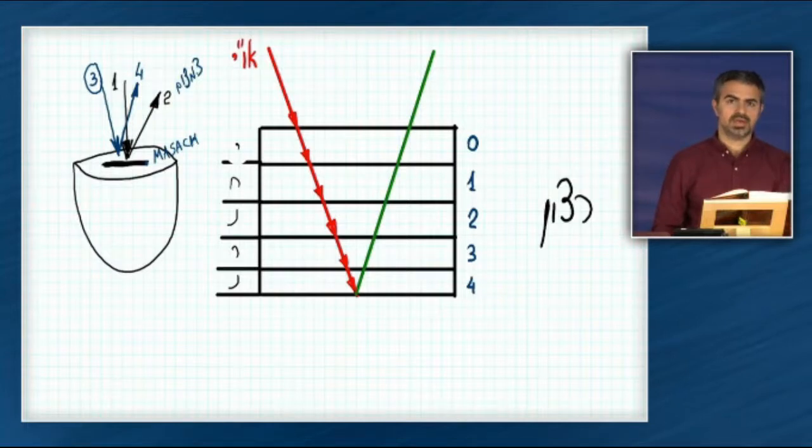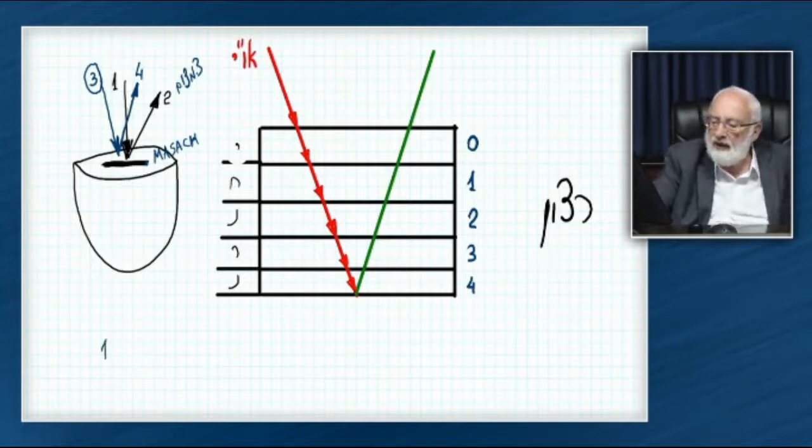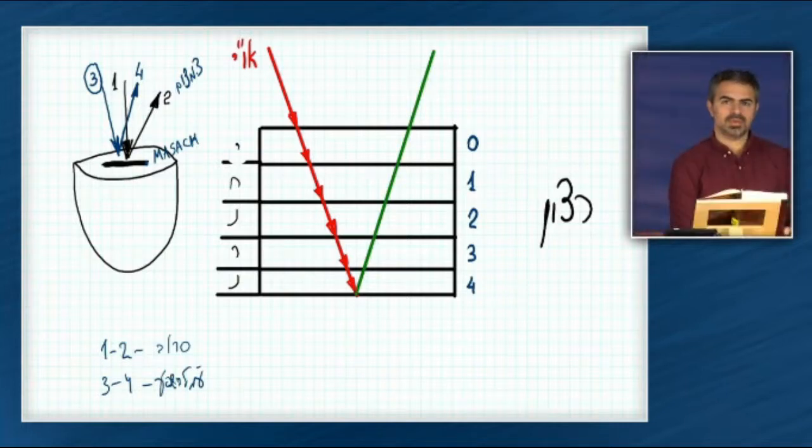According to what he writes, number three becomes the main thing. Number three is that he examines and is going to receive as an intention. One and two is the refusal, and three and four is in order to bestow.